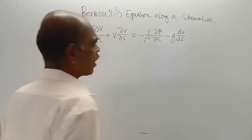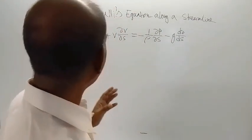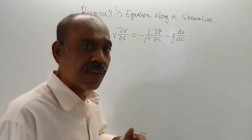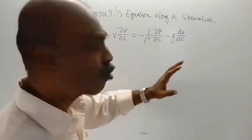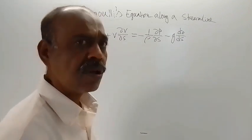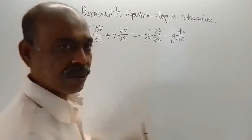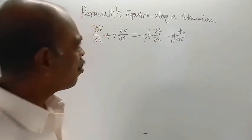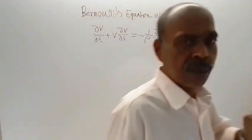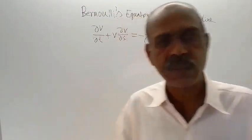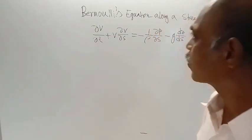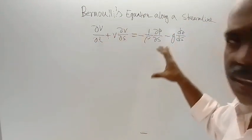So this equation was derived. For the derivation of Bernoulli's equation along the streamline, first you need to derive Euler's equation of motion — that is this equation. After that, you can derive Bernoulli's equation by using this one. For the derivation of Euler's equation of motion along the streamline, you can watch my previous video. So, after that, I am starting here.